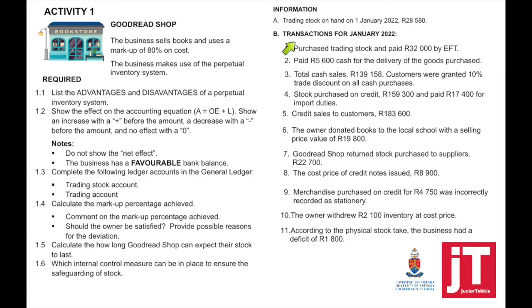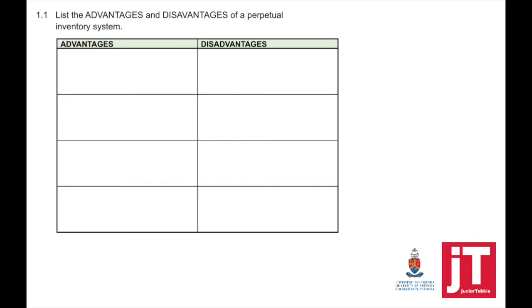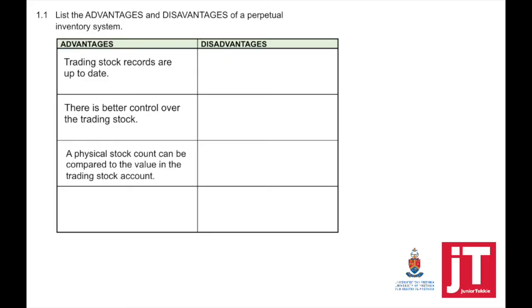In my information, they provided me: A — the trading stock on hand on the 1st of January 2022, and B — the transactions for the month of January. Question 1.1: list the advantages and disadvantages. Looking at the advantages of this type of system: trading stock records are up to date, because all movement of trading stock is recorded in your trading stock account. There is better control over your trading stock. A physical stock count can be compared to the value in your trading stock account, so you can determine if there is a deficit or a surplus.